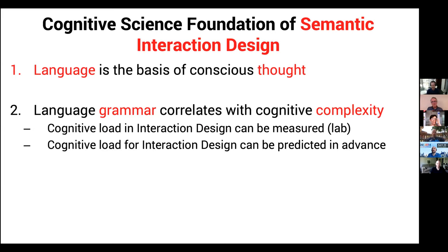We also know in both linguistics and the psychology of computer programming that the grammar of any language will correlate with cognitive complexity. Languages like Mandarin Chinese are harder to learn and master; English is somewhat easier but still quite irregular; and Semitic languages like Hebrew and Arabic are actually the fastest for most people to learn because they have very few exceptions. Cognitive load can be measured in a usability lab, and what's new is I'm going to show you how you can actually predict cognitive load in advance before you draw a single screen.